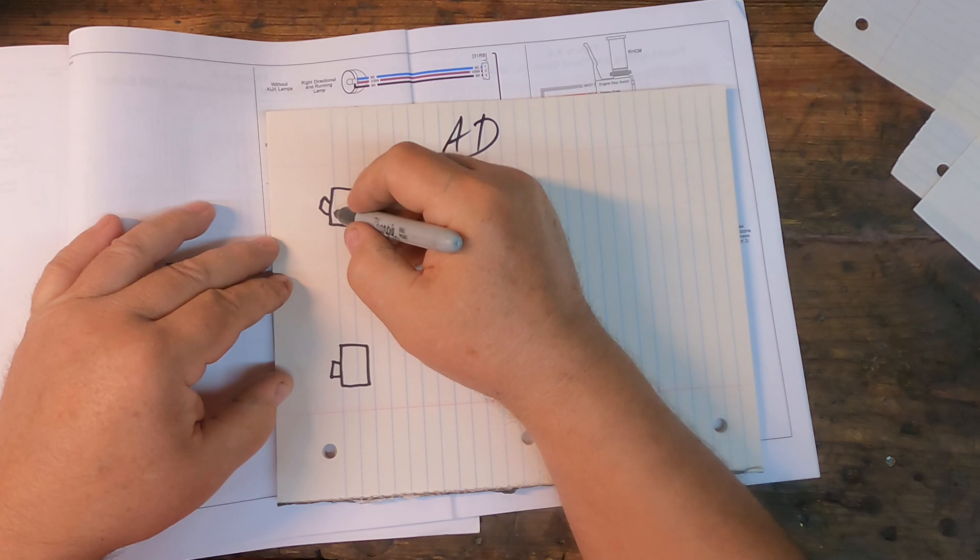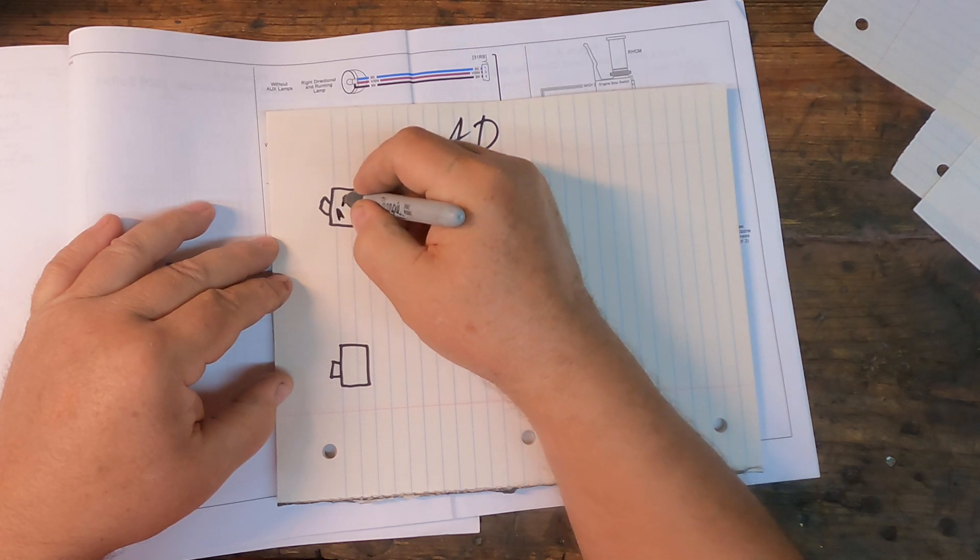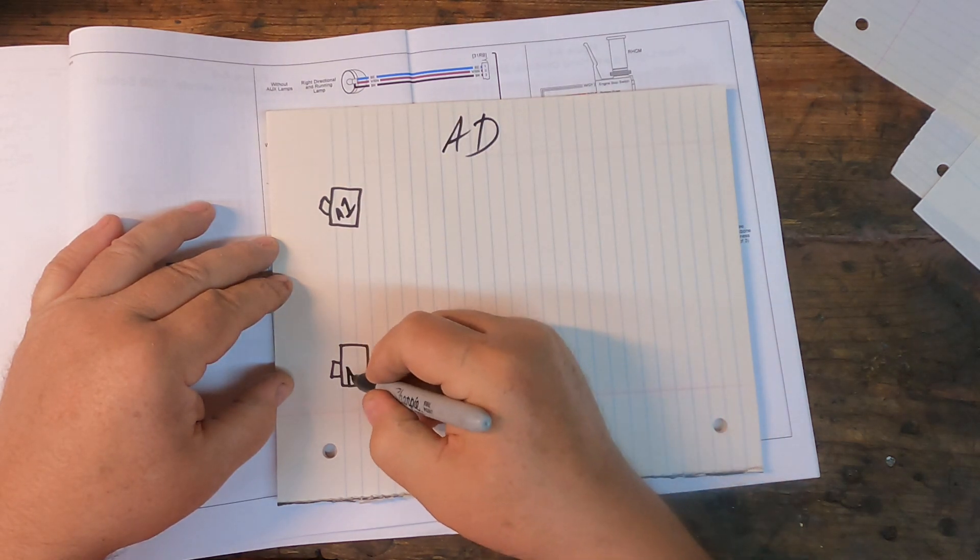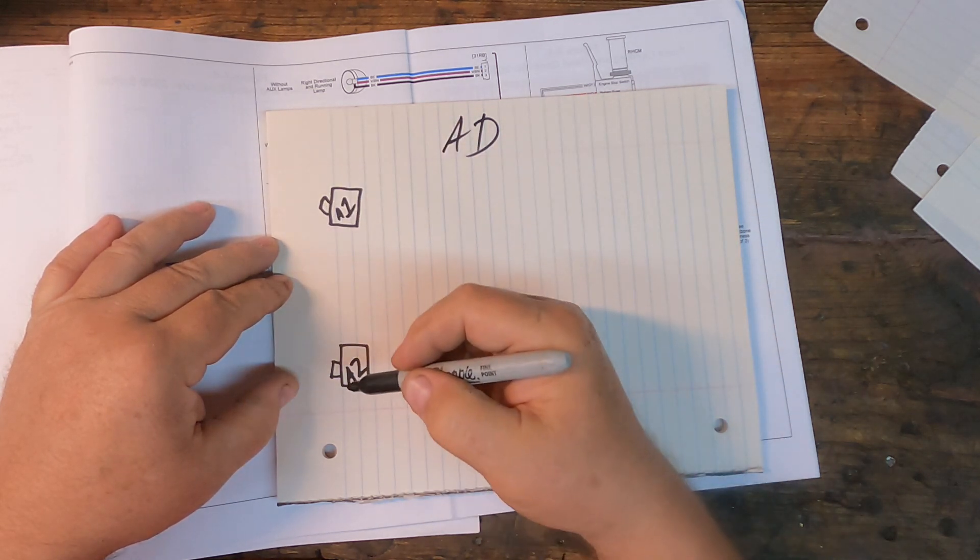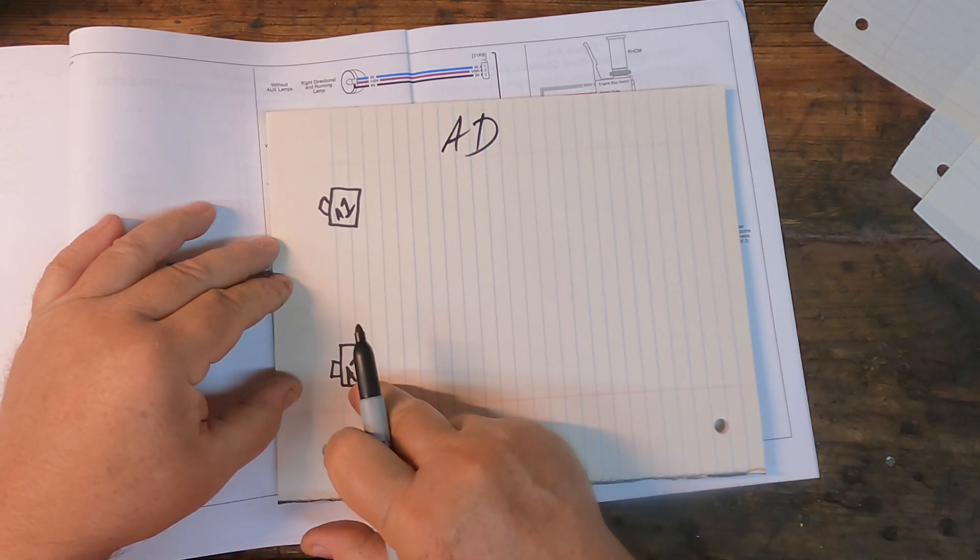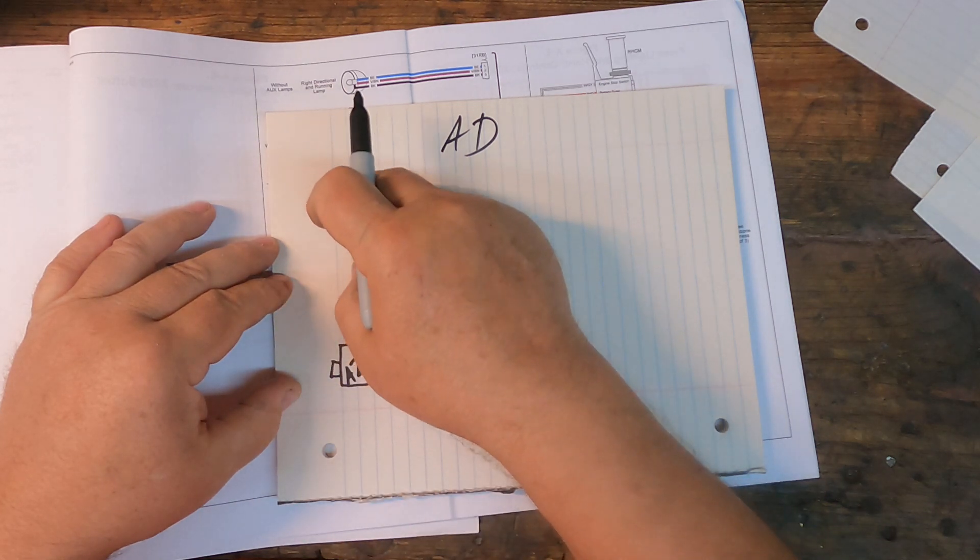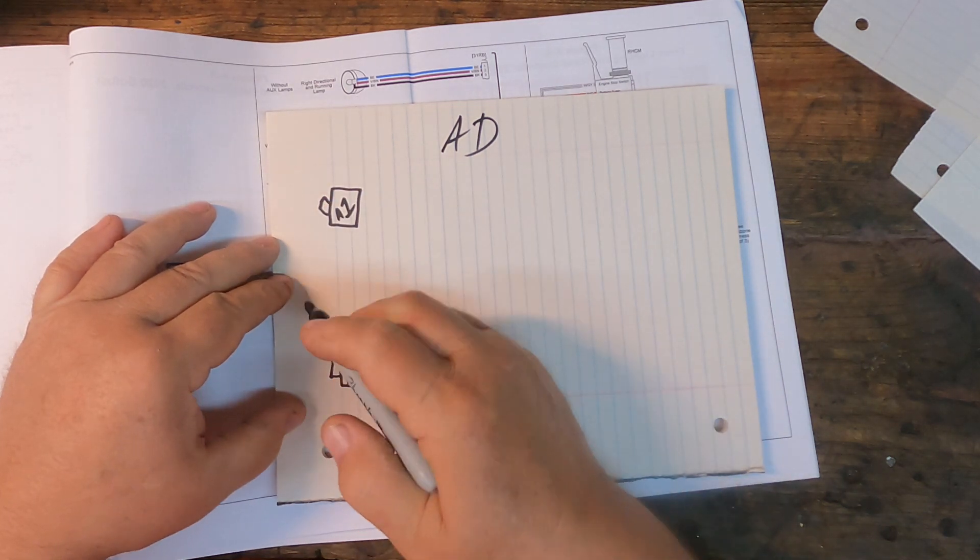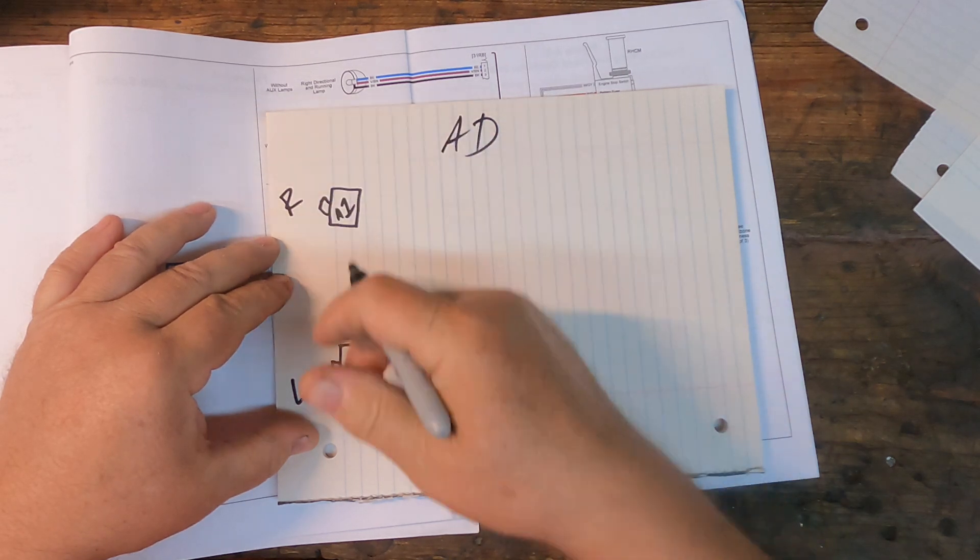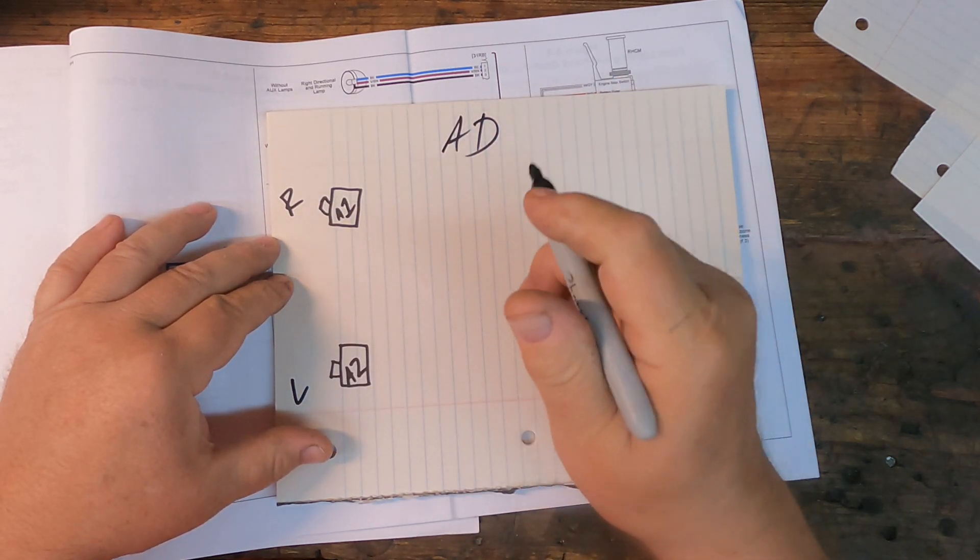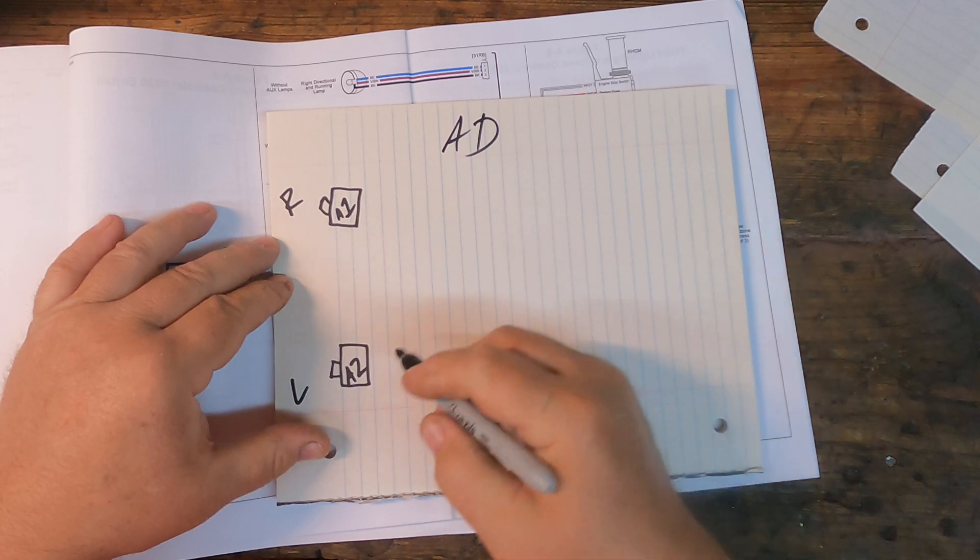So let's just call this one A1 and let's just call this one A2. This address is programmed into these things. So if I took the A2 one and I plugged it into the A1 hole, this one is going to turn on the left-hand turn signal no matter where it's plugged in. And we'll talk a little bit more about that in a minute.